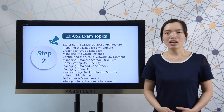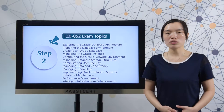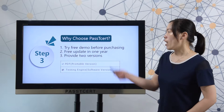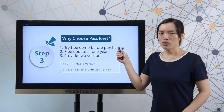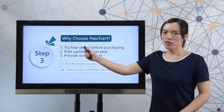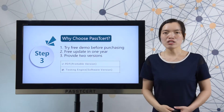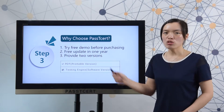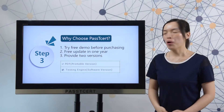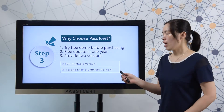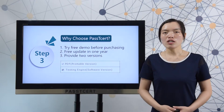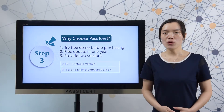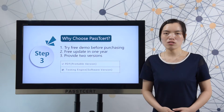Before you decide to take the test, you will search material online. Let's view why choose PathDestinal material. Before you decide to make a purchase, you can try a free demo first. PathDestinal provides free updates for one year. PathDestinal provides two versions for this material: one is PDF and the other is software. PDF version is convenient for you to read and study, and you can print it out to read all the questions and answers anywhere.